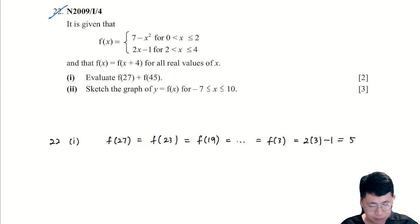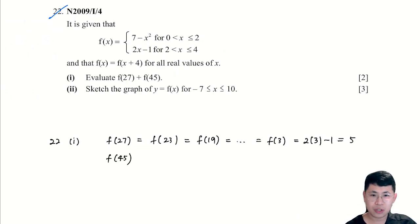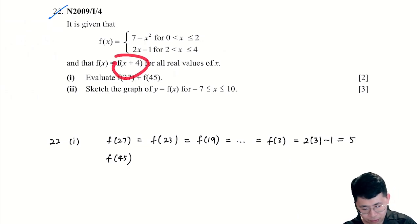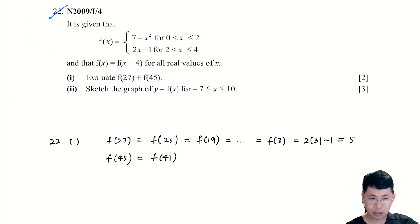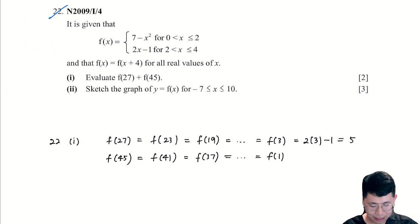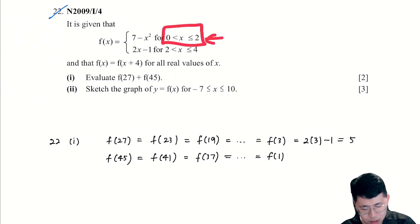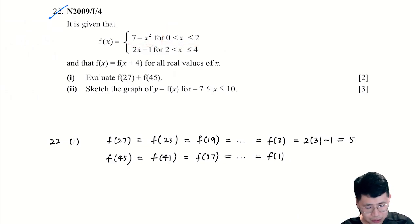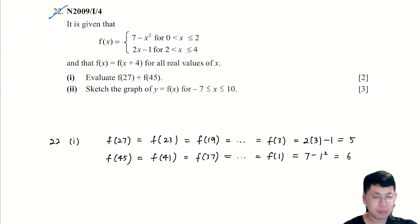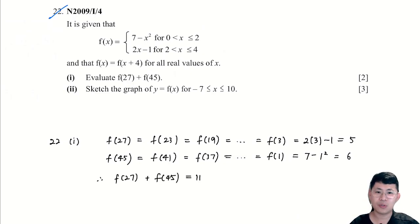Next we look at f(45). Using the same strategy, we subtract 4 repeatedly: 45, 41, 37, all the way until we get f(1). Since 1 falls in the range 0 to 2, we substitute into that sub-function: 7 minus 1 gives us 6. Altogether, f(27) + f(45) = 5 + 6 = 11.